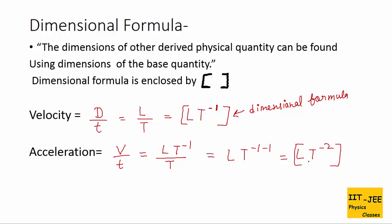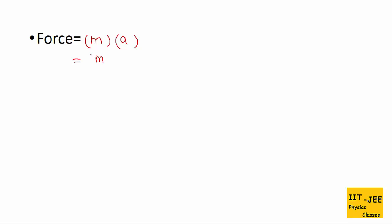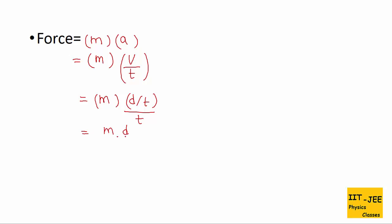So L T⁻² is the dimensional formula of acceleration. Now let's find the dimension of force. We use the formula mass times acceleration. Here mass is a base quantity but acceleration is not, so we need to break it into base quantities using A = V/T, and then V = D/T. Summarizing everything: force equals M D over T².